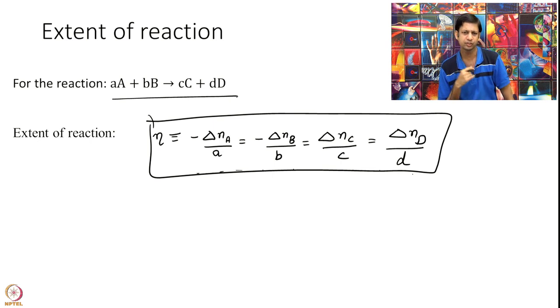The idea is if delta NA equal to 0 then the extent is 0 that means nothing has happened you are at t equal to 0. And if delta NA is a then eta is 1.